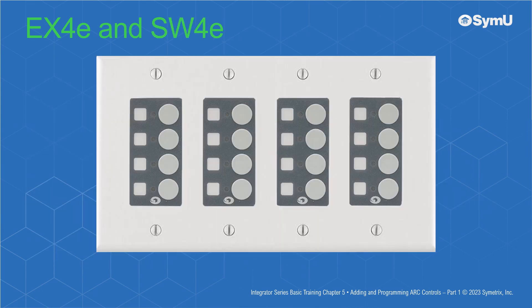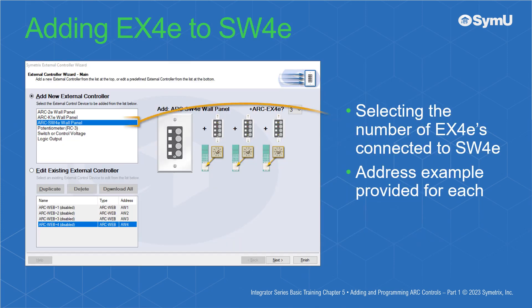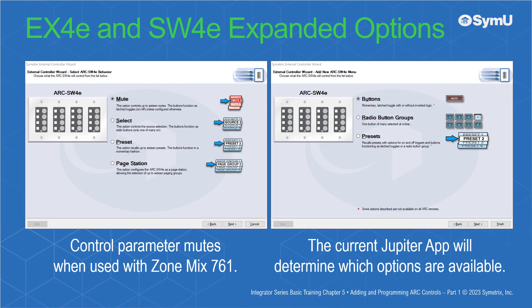Next, we'll look at the EX4Es coupled with the SW4E. The creation of an ARC SW4E combined with up to three ARC EX4Es is started by selecting the number of EX4E expanders that are currently connected to your SW4E on the initial page via the drop-down list. An address example for each expander is given. The expanders' options with the EX4E are identical to a single SW4E.